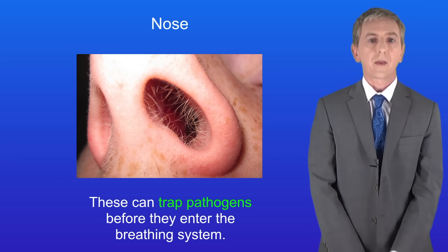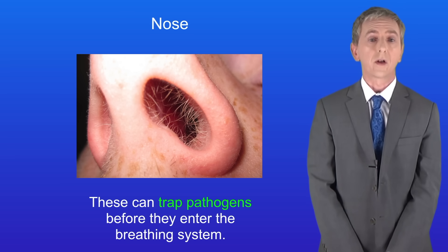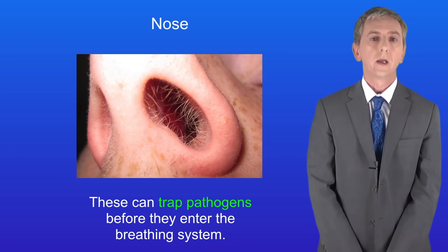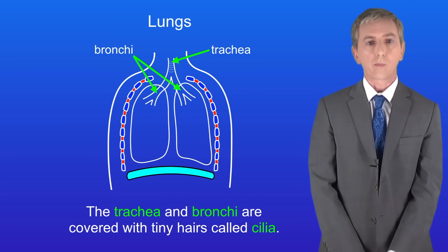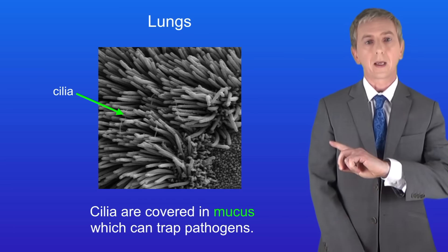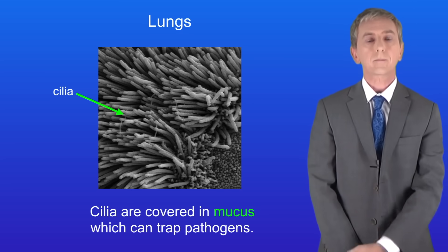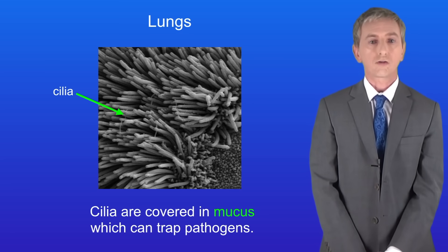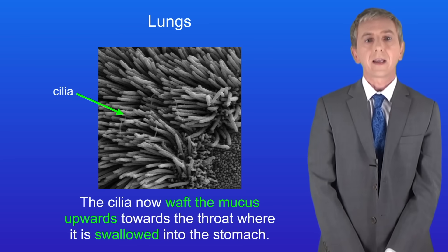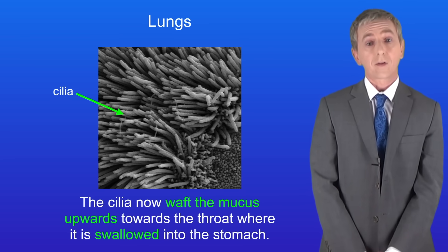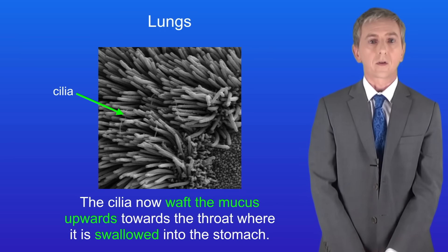However, sometimes pathogens pass through the nose and make their way down towards our lungs. To stop this, the trachea and the bronchi are covered with tiny hairs called cilia. Cilia are covered in mucus which can trap pathogens. The cilia then waft the mucus upwards towards the throat where it's swallowed into the stomach.